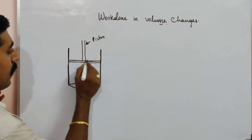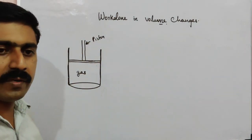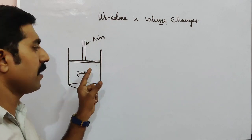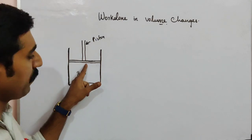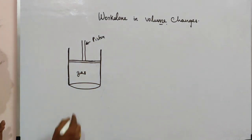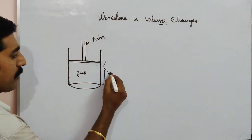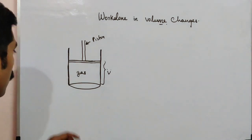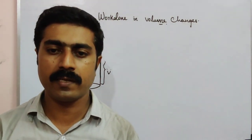So let's introduce a piston — a movable, frictionless piston. Initially, the volume of the gas is denoted by the letter V. The volume is constant, and the gas is in an equilibrium state.